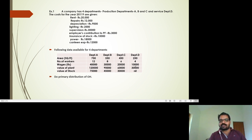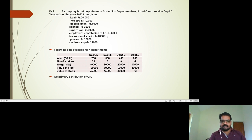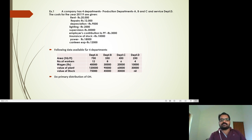The ratio for direct wages is 4:3:2:1. We distribute employees' contribution based on either number of employees or direct wages — normally companies follow the number of employees. For insurance of stock, the service department does not hold stock, so we distribute among the three production departments only. The ratio is 75:45:30, simplified to 15:9:6. We distribute the value of stock among production departments only.